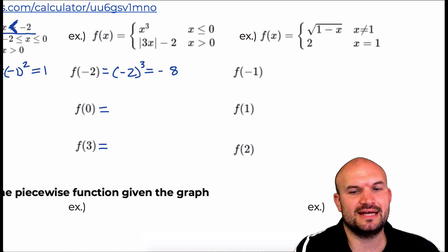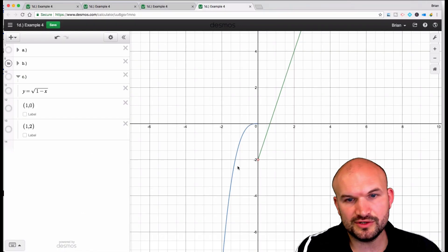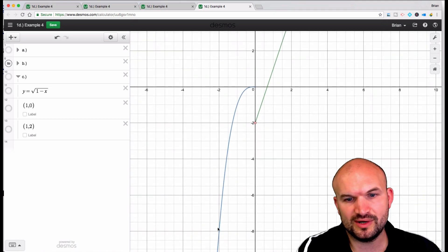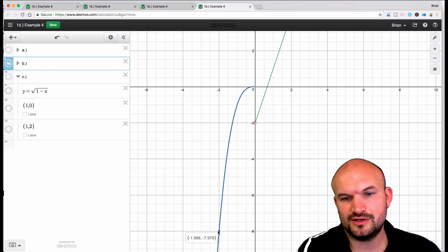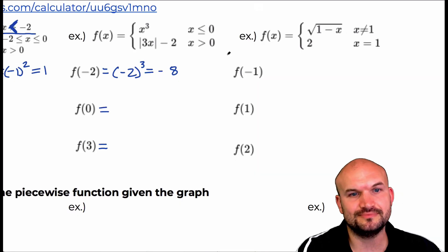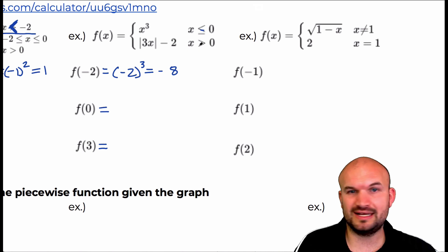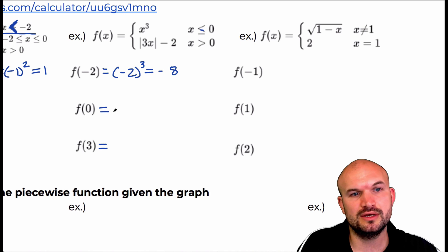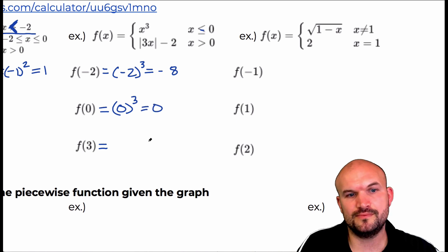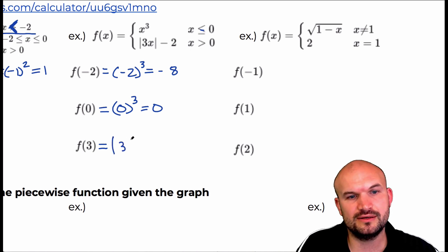If we look back at the graph, at negative two you can see we are dealing with the point negative eight — that makes sense. F of zero is important because there's a jump discontinuity: one side is equal and the other is not, so we're only going to plug zero into the bottom function. Zero cubed equals zero. Then f of three — for values greater than zero, that's the absolute value of three times three minus two: three times three is nine, absolute value of nine is nine, nine minus two is seven.